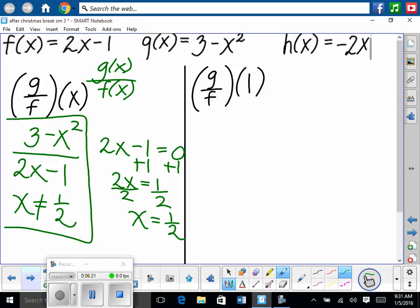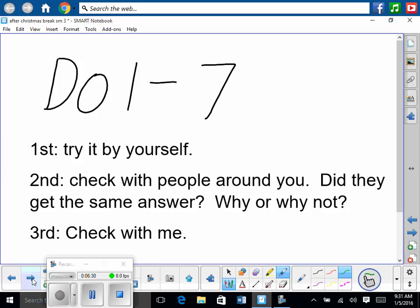Now let's find g divided by f of 1. We already did g divided by f, but now we'll plug in 1. I'm not going to go through that part. I think you guys are good. Okay. Do 1 through 7. So here are the procedures for the class. You try it by yourself first. Then second, check with the people around you. Did they get the same answer? Why or why not? And then once you've agreed or had a few people check with you, then you can check with me. Ready, set, go.